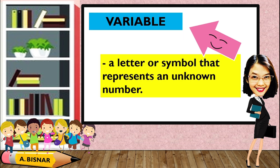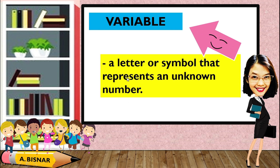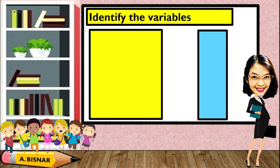Let us now define a variable. A variable is a letter or symbol that represents an unknown number. For example, in 3a plus 2, it is a letter or symbol that represents an unknown value, which means that the variable here is a.